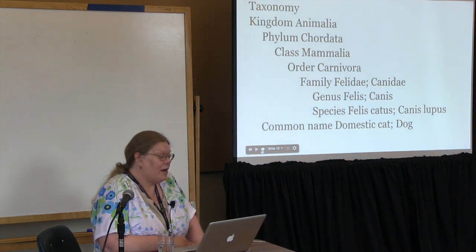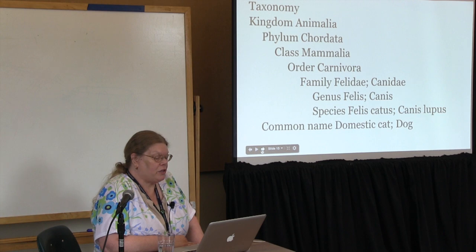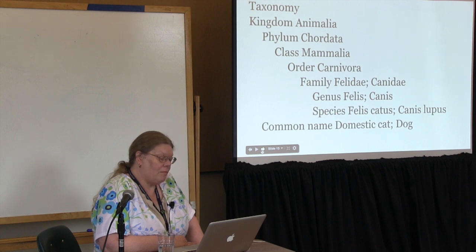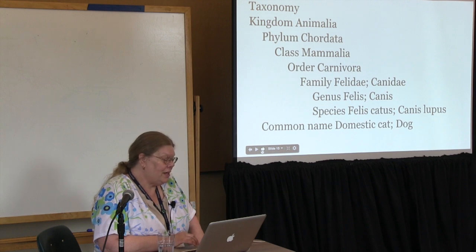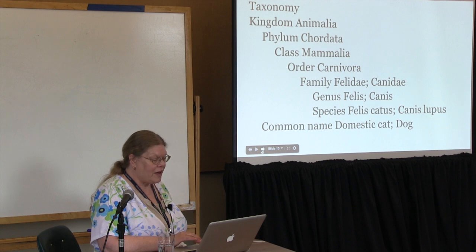The taxonomy of a cat: Kingdom Animalia, Phylum Chordata, Class Mammalia, Order Carnivora, Family Felidae — here's where dogs branch off into Canidae — Genus Felis, for dogs it's Canis; Species felis catus, or for dogs canis lupus, down to their common names of cat and dog. As you can see in the taxonomy, they're very similar until they get down to the family. It's easy from observation to see that it's an animal, that it has a backbone, that it's a mammal, that it's a carnivore — but then it gets harder to tell the difference between the two.